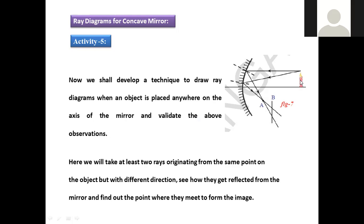The candle is kept here and we project two different light rays from it. Two different light rays are ejected from the candle and fall on the mirror. Whenever these incident light rays fall on the mirror, they bounce back and converge at point A. This convergence point is where the two reflected light rays meet.